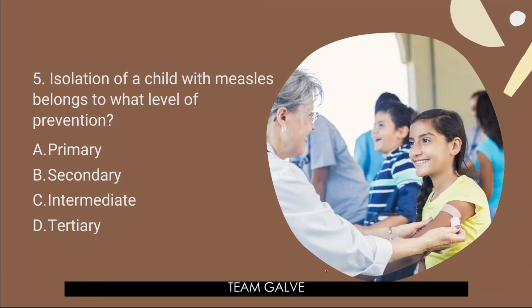Question number five: Isolation of a child with measles belongs to what level of prevention? Is it A, primary? B, secondary? C, intermediate? Or D, tertiary? The answer is letter A, primary. The purpose of isolating a client with a communicable disease is to protect those who are not sick — this is called specific disease prevention.